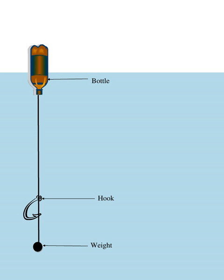Jug fishing consists of a simple setup where lines are tied onto jugs and weights can be added to the line to keep the jug's location fixed.